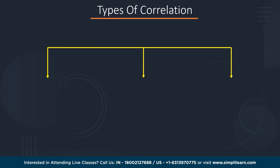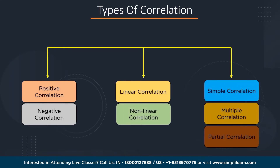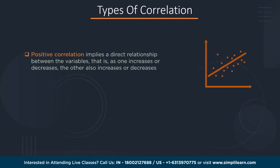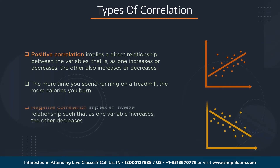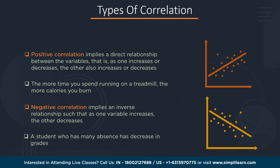There are mainly three categories of correlation. The first is positive and negative correlation. The second is linear and nonlinear correlation. The third is simple, multiple, and partial correlation. In positive correlation, the two variables increase or decrease in the same direction — for example, the calories you burn are directly proportional to the time you run on a treadmill. In negative correlation, the relationship line has a negative slope — for example, a student with many absences has a decrease in grades.